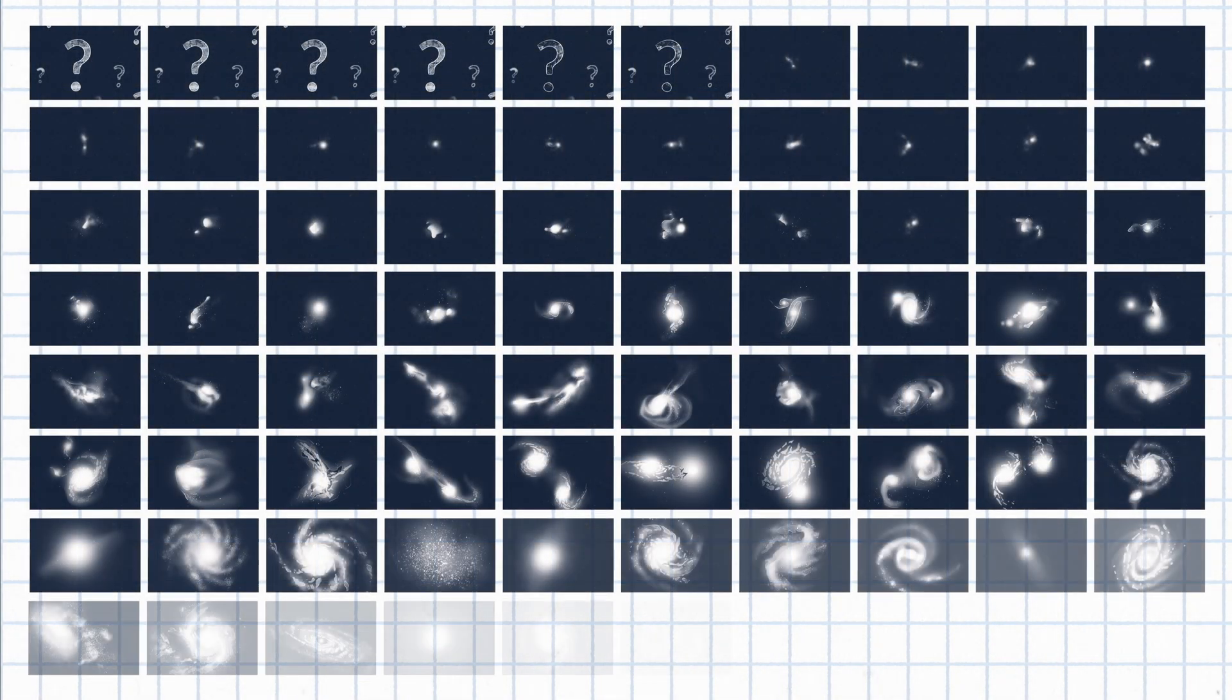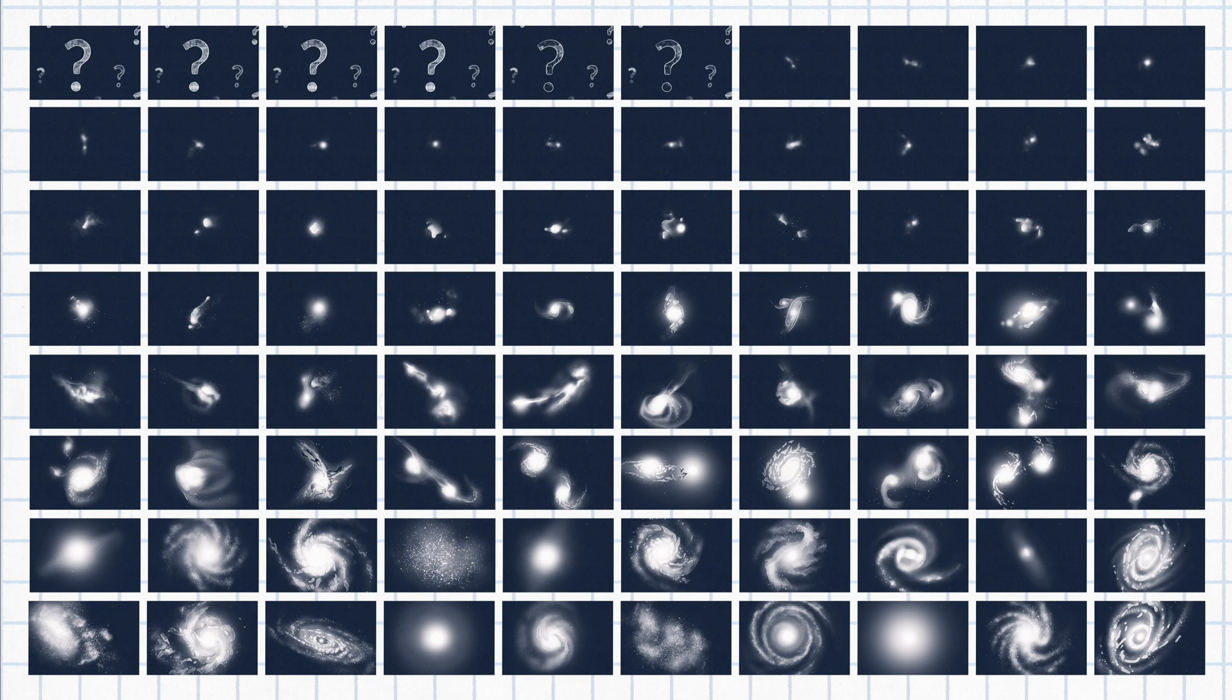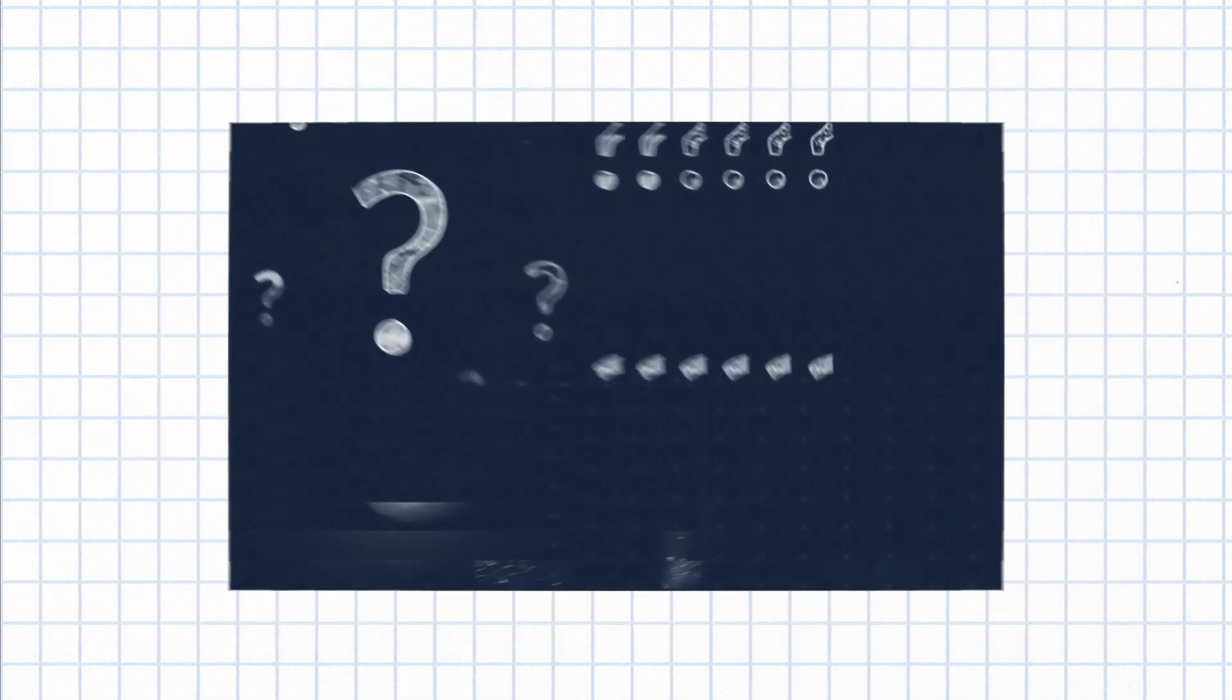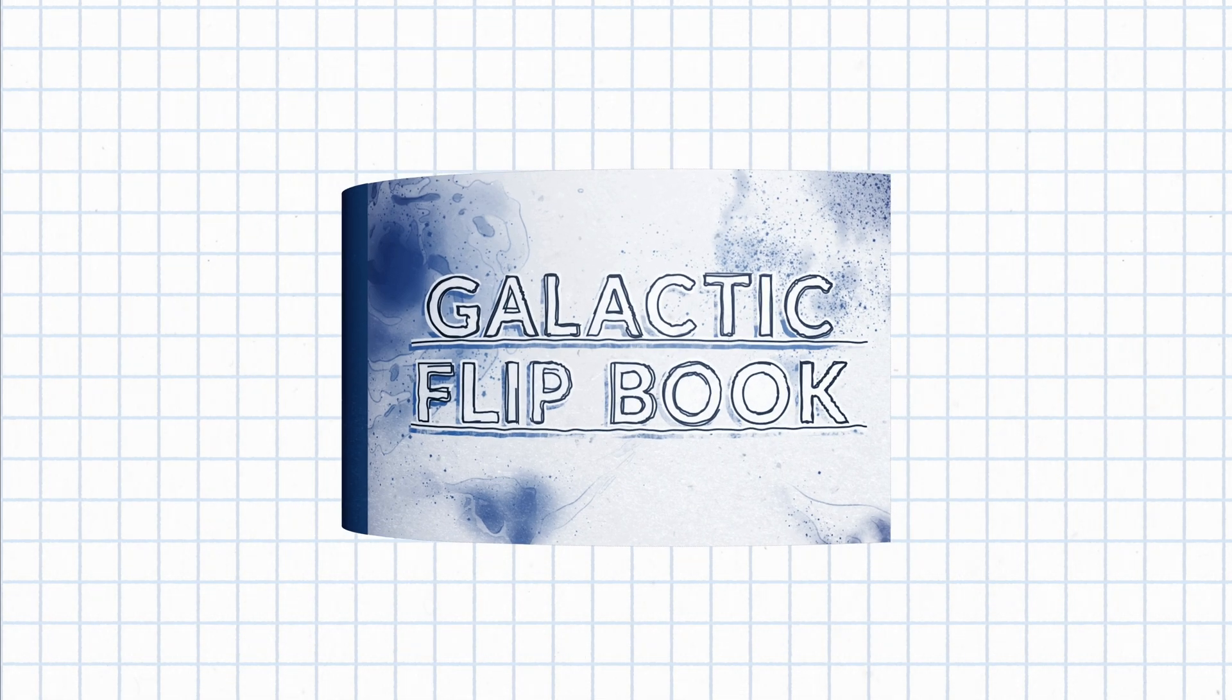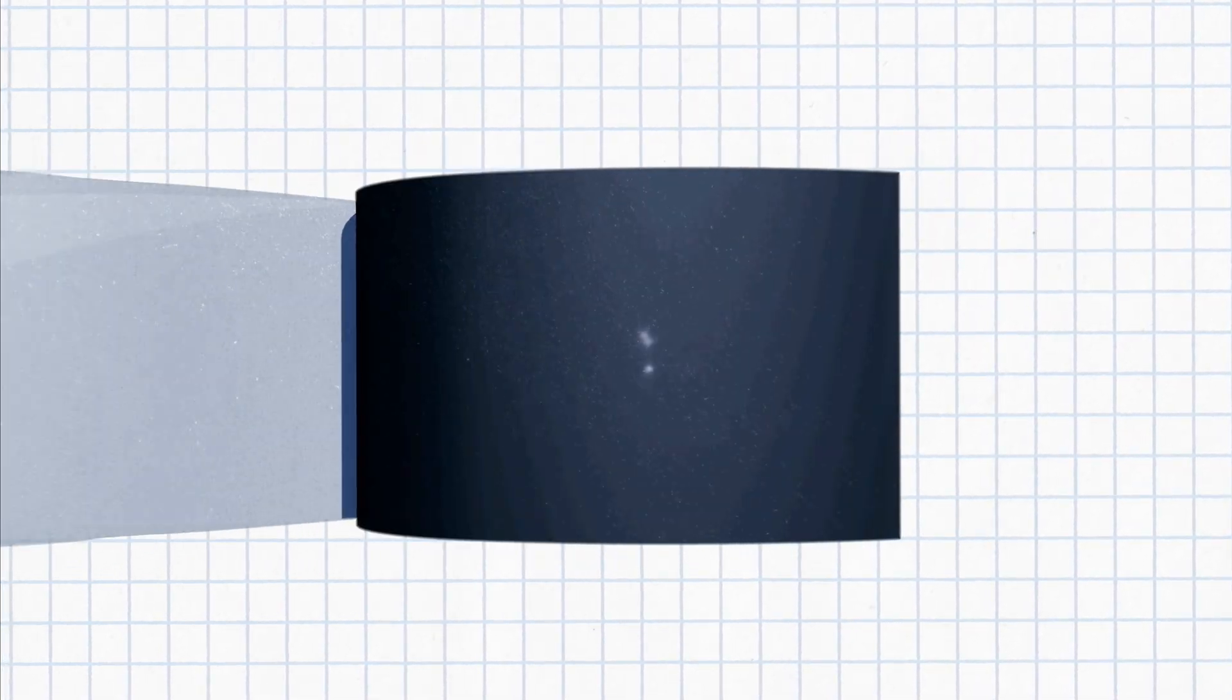Using images of many different galaxies throughout the history of the universe, astronomers can assemble something like a galactic flipbook. Patterns emerge.